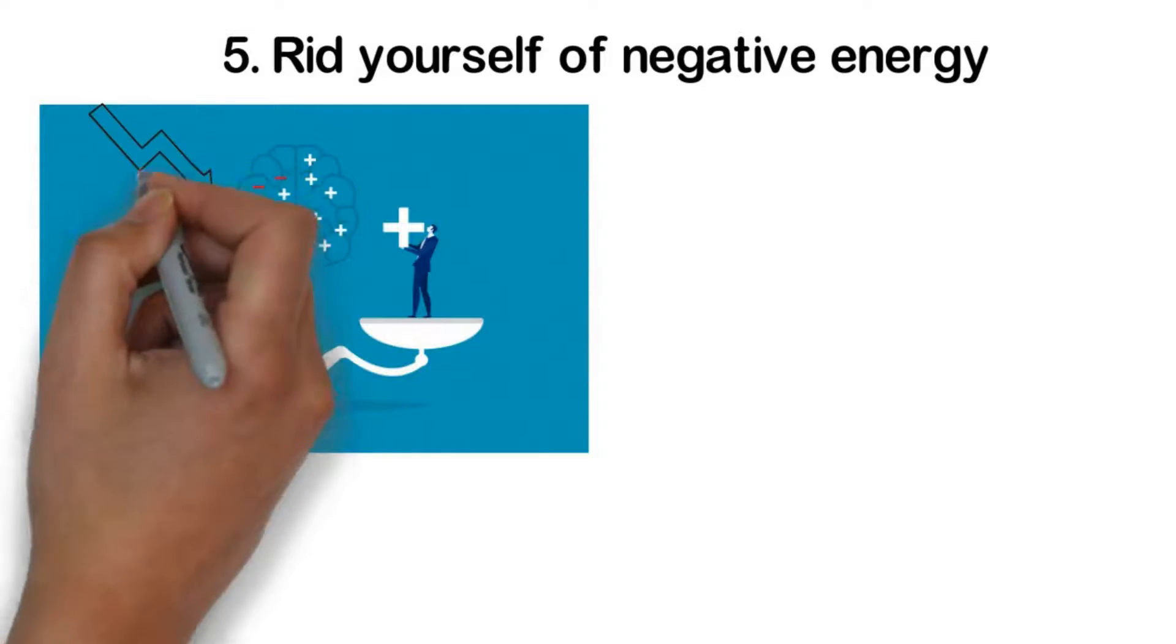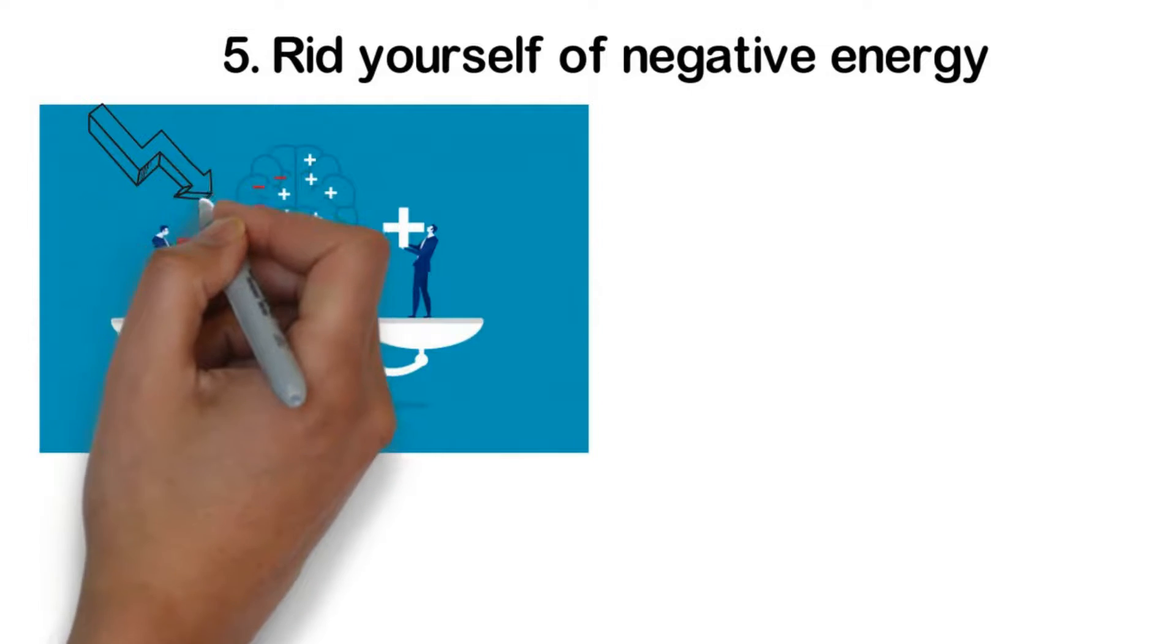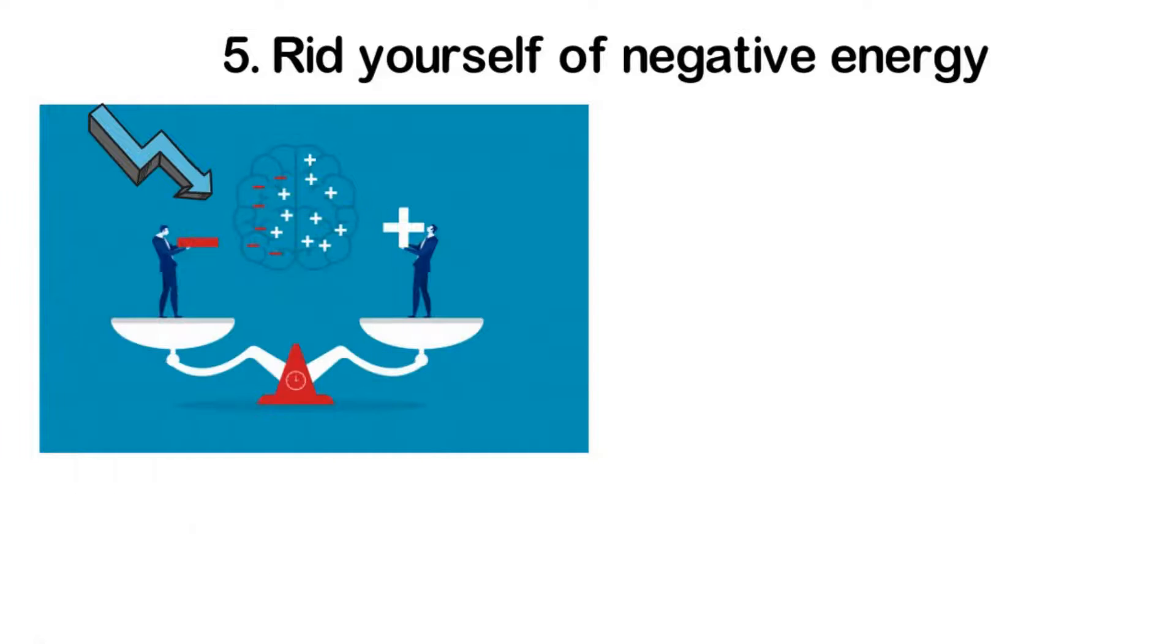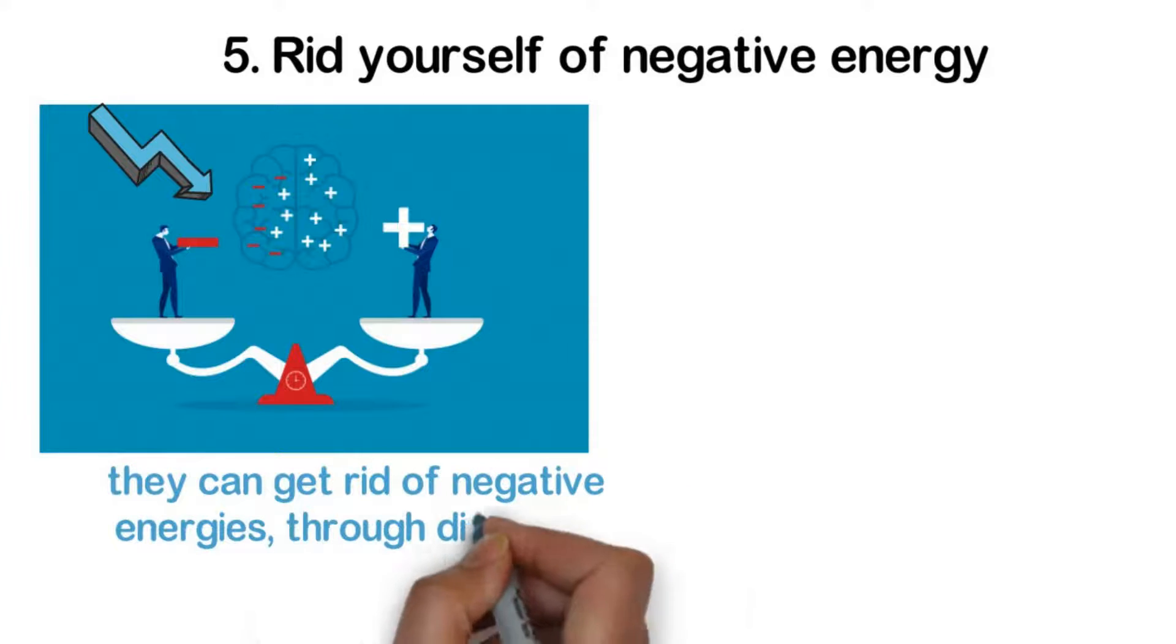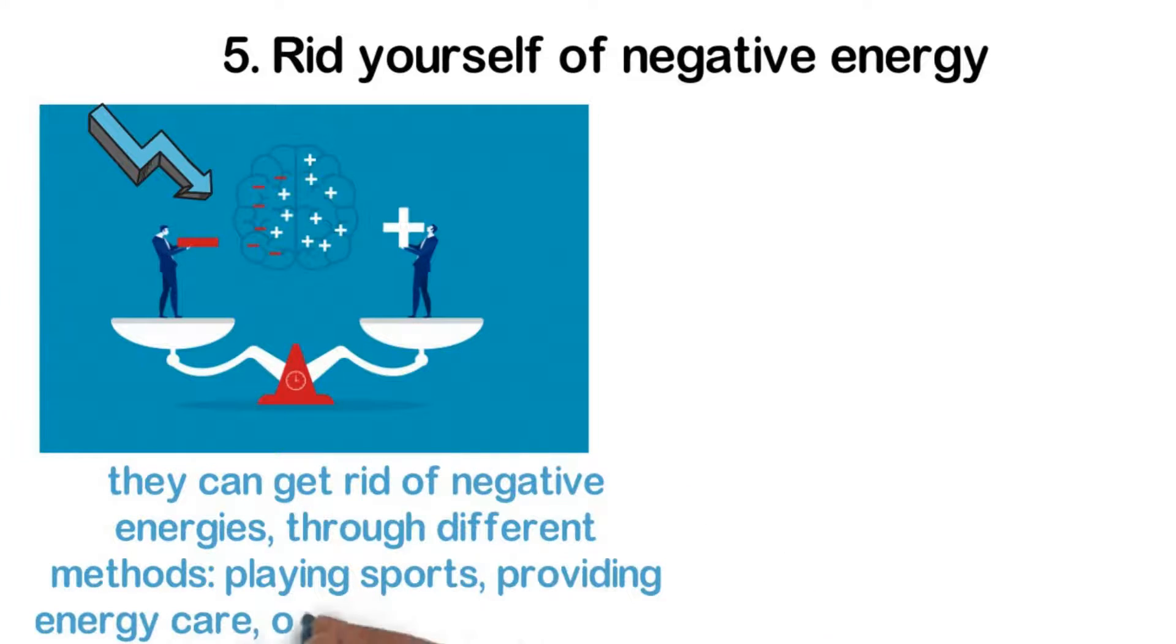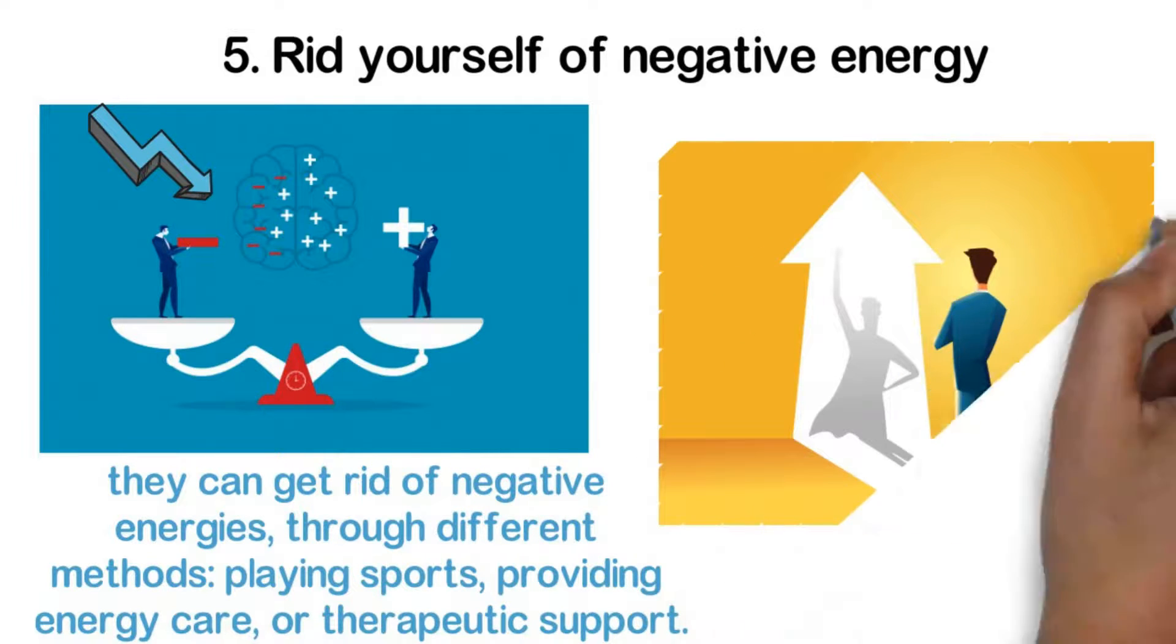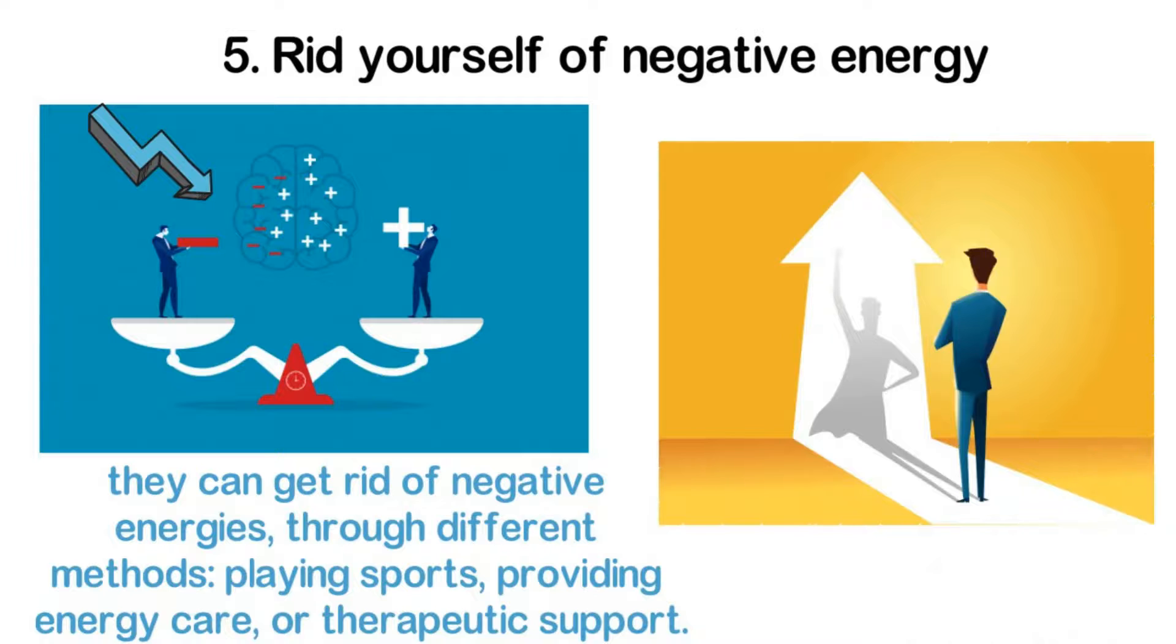Stress, anxiety, fear of failure, fear of those close to us, problems with partners—these are all negative energies that can directly affect your body and mind and prevent you from achieving your goals. Leaders of large groups, heads of associations, artists, freelancers—these individuals are increasingly becoming aware that they can get rid of negative energies through different methods: playing sports, providing energy care or therapeutic support, acknowledging the right mentality to adopt for success.